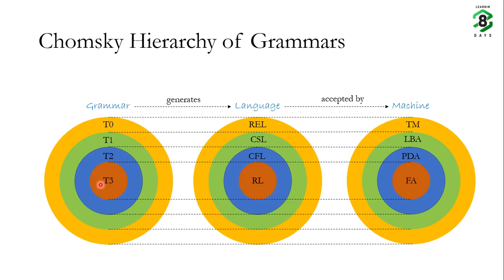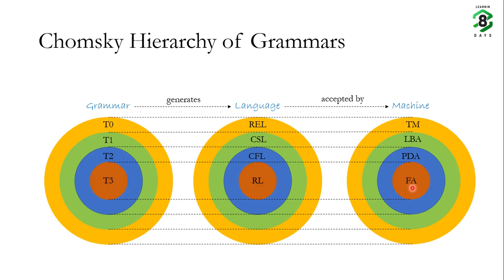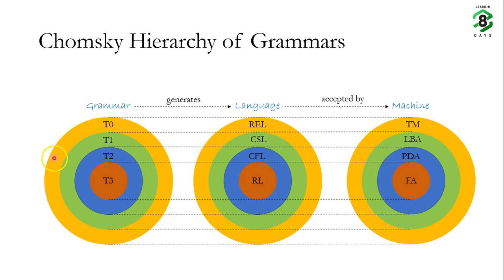If a grammar has very restricted production rules, the language it produces is quite simple. Since T3 has the most restricted production rules, regular language is the simplest form of language and we need a very simple machine — the finite automata — to accept it. Context free language is more complicated than regular language, context sensitive language is more complicated than both, and recursively enumerable language is the most complicated, accepted by the most complex machine, the Turing machine.